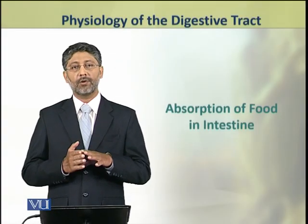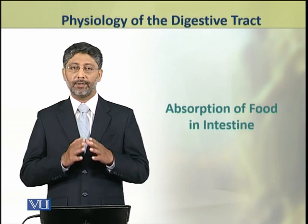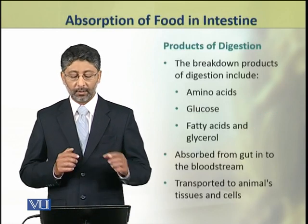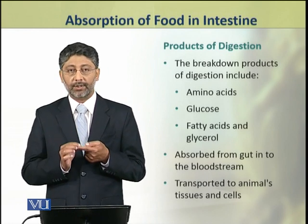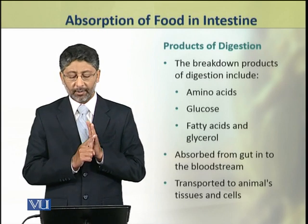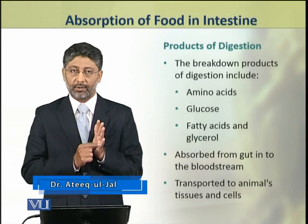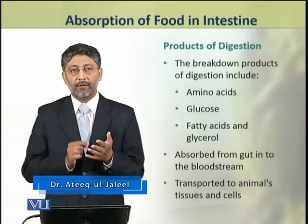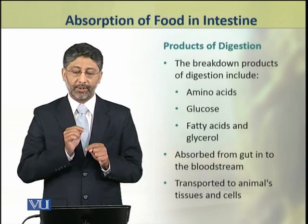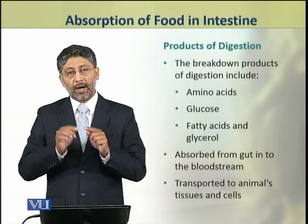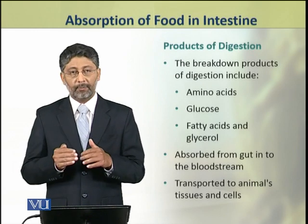Dear students, in this topic we shall discuss the absorption of food in the intestine. The breakdown products of digestion include the amino acids, glucose, fatty acids and glycerol. These products of digestion are absorbed from the gut into the bloodstream and are transported to animals' tissues and cells by the blood.